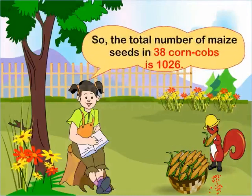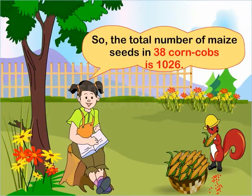So, the total number of maize seeds in 38 corn cobs is 1026.